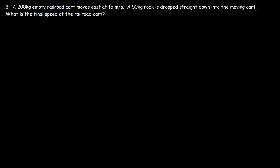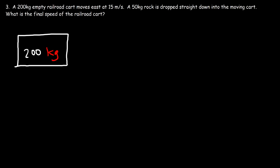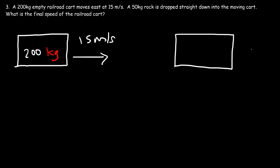Now let's move on to the next problem. A 200 kilogram empty railroad cart moves east at 15 meters per second. A 50 kilogram rock is dropped straight down into the moving cart. What is the final speed of the railroad cart? Let's say this is the cart. It has a mass of 200 kg and is currently moving at 15 meters per second. What will the new speed be after dropping the rock in?